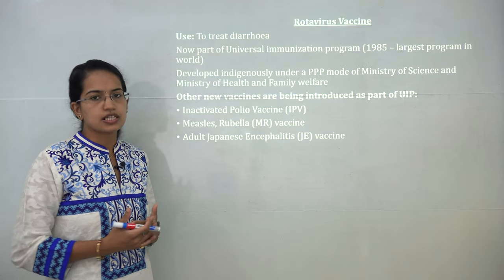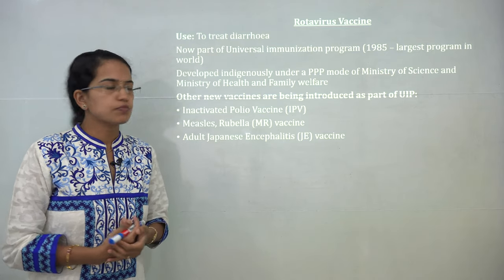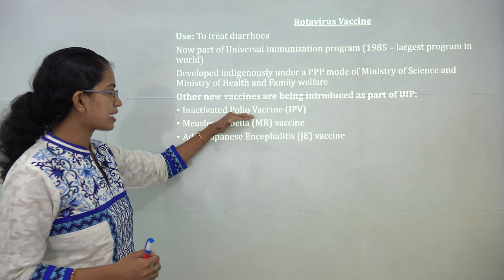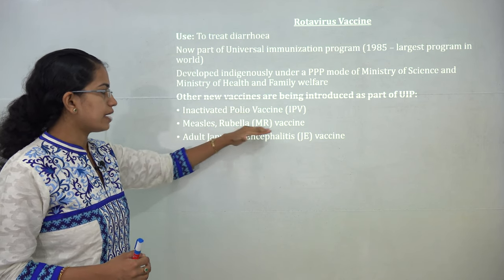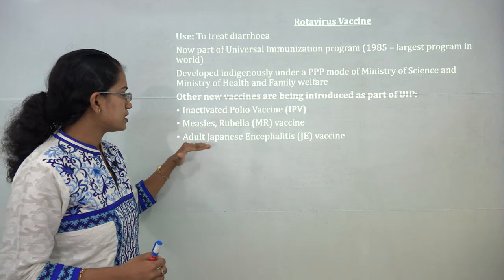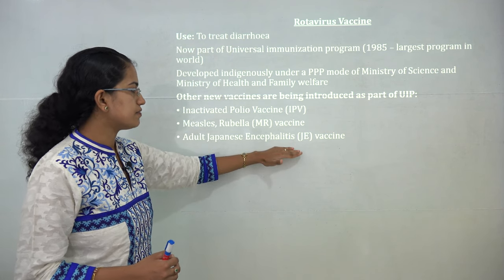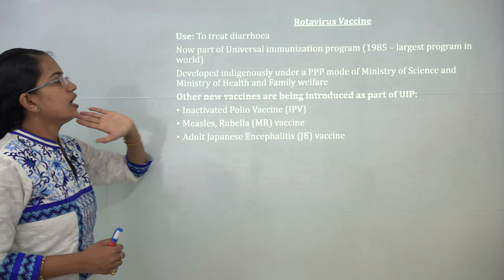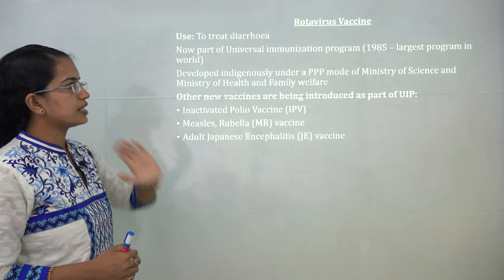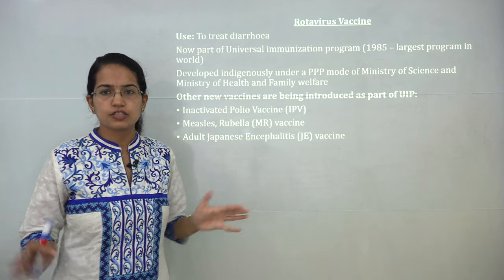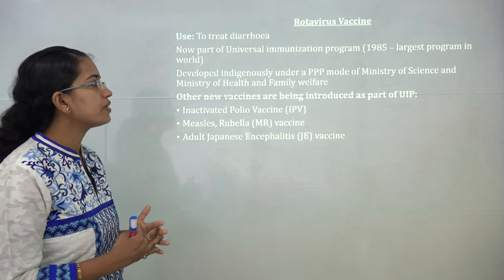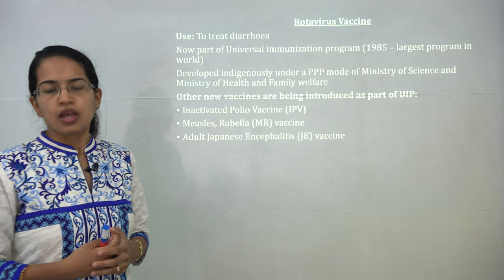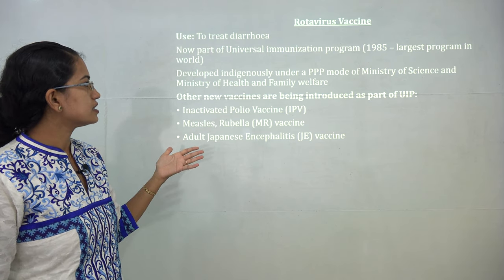The rotavirus vaccine has been introduced under India's Universal Immunization Program (UIP). The UIP has introduced several new vaccines, including the inactivated polio vaccine, the MR (measles-rubella) vaccine, Japanese encephalitis vaccine, and rotavirus vaccine used to treat diarrhea. The UIP is the largest immunization program worldwide, started in 1985. Mission Indradhanush now aims at vaccinating all mothers and children against various diseases.